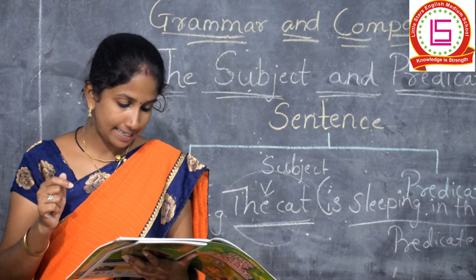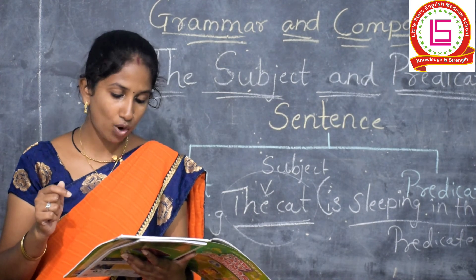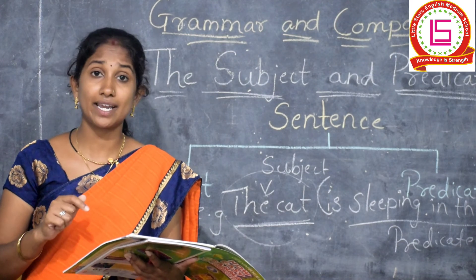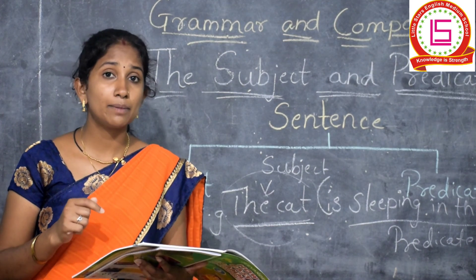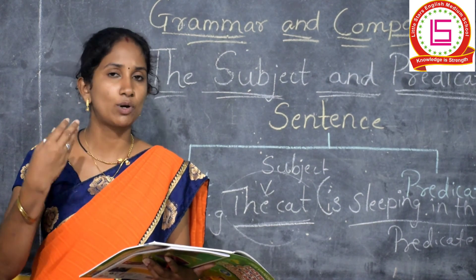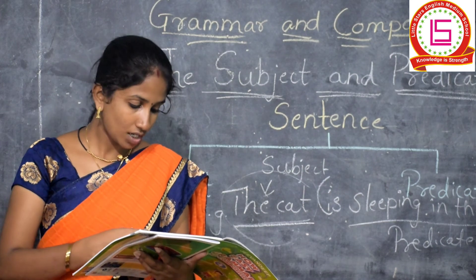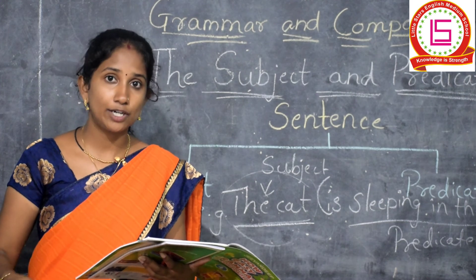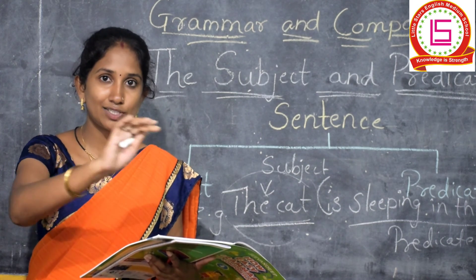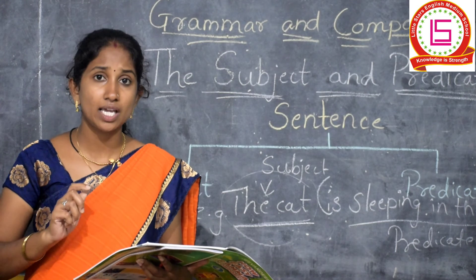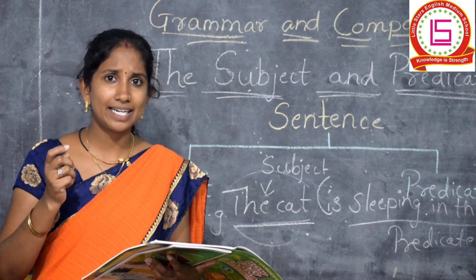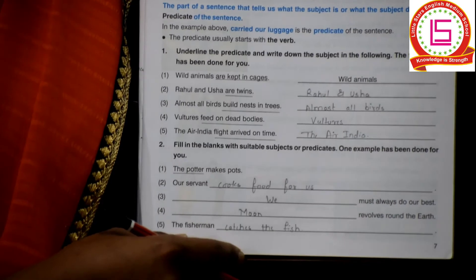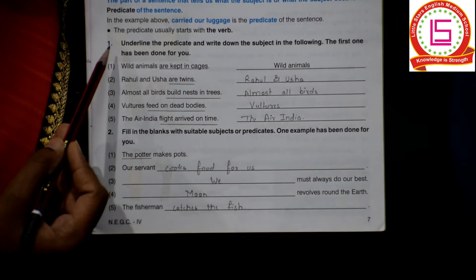The part of a sentence that tells us what the subject is or what the subject does is the predicate. Predicate is something that tells about the subject. In this example, carried our luggage is the predicate. After the subject, the rest of the sentence will be your predicate. Now see your first exercise.